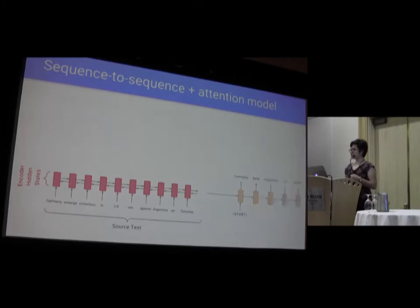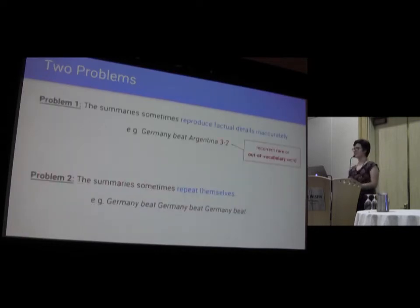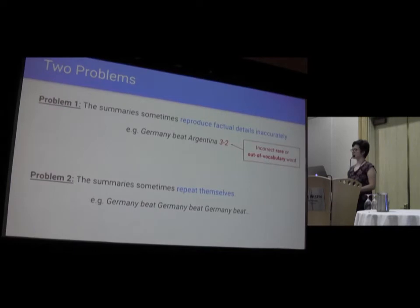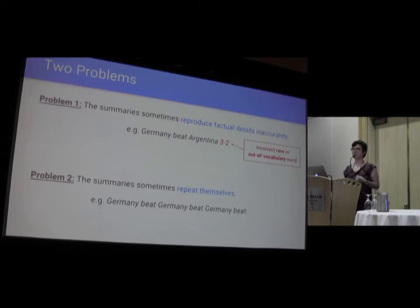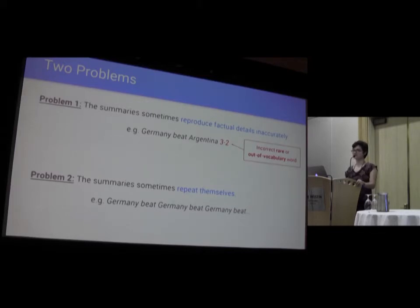By doing this repeatedly, you should be able to generate an abstractive summary like 'Germany beat Argentina 2-0.' However, when we implemented this system, we found at least two significant problems. The first problem is that summaries sometimes reproduce factual details inaccurately — for example, it might produce 'Germany beat Argentina 3-2', using the wrong score. As a pattern, rare or out-of-vocabulary words are often getting incorrectly copied. The second problem is that summaries often repeat themselves — you might end up saying the same two words over and over again, or produce the same sentence repeatedly. This is a really common problem when you use RNNs to generate text, and it's seen in neural machine translation as well.